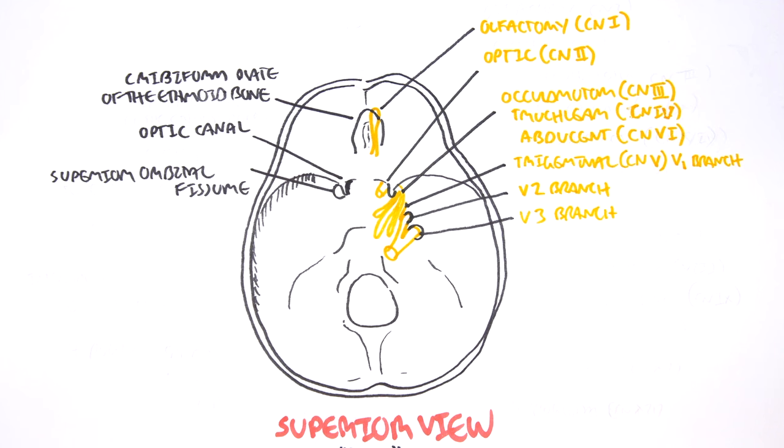They actually pass through part of the brain known as the cavernous sinus. The cavernous sinus is just a collection of essentially a venous system. Problems in this cavernous sinus, such as an infection, can cause complications associated with these cranial nerves.